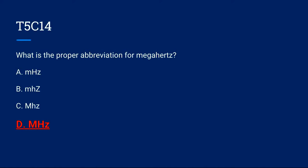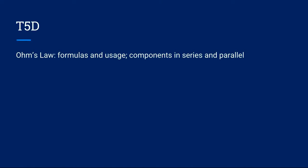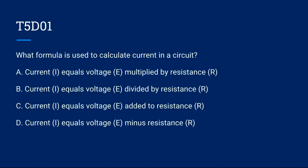T5D covers Ohm's law formulas and usage, and components in series and parallel. T5D01: What is the formula used to calculate current in a circuit? A. Current equals voltage multiplied by resistance, B. Current equals voltage divided by resistance.